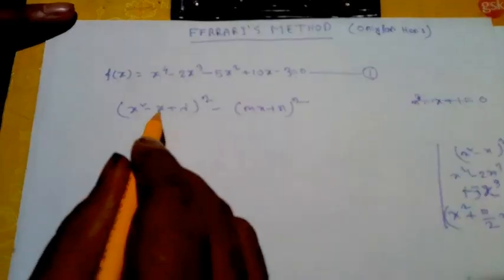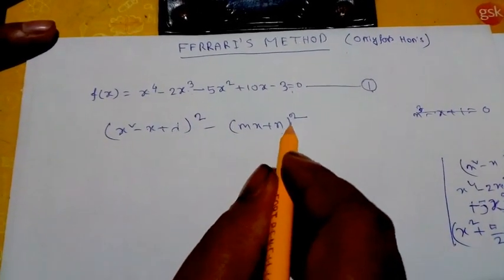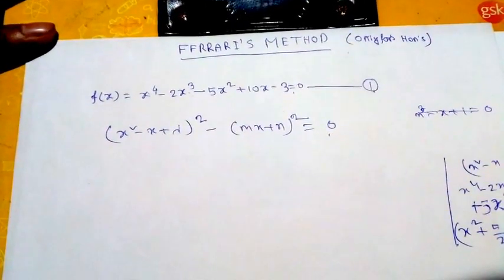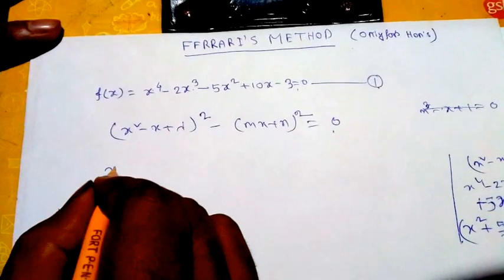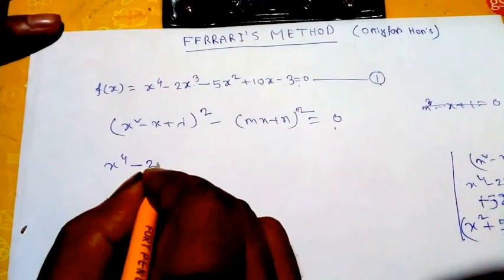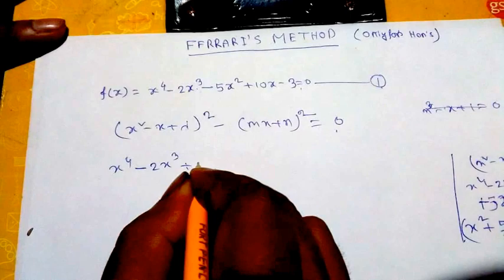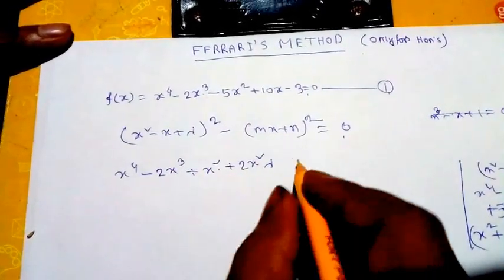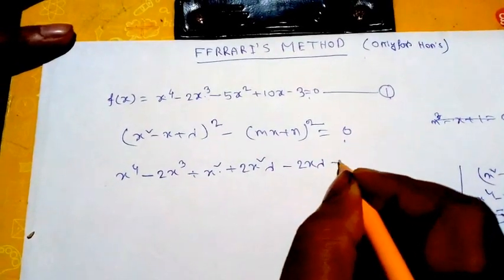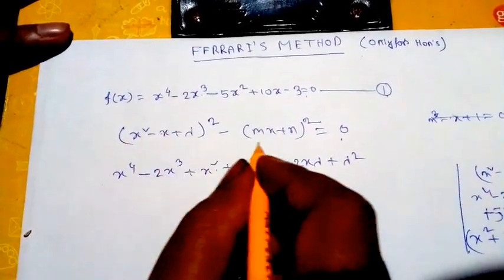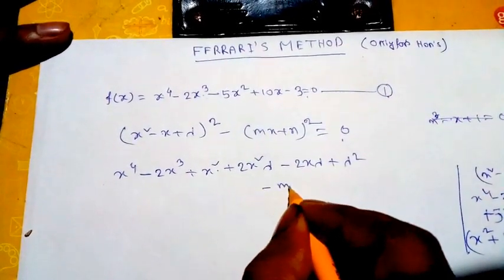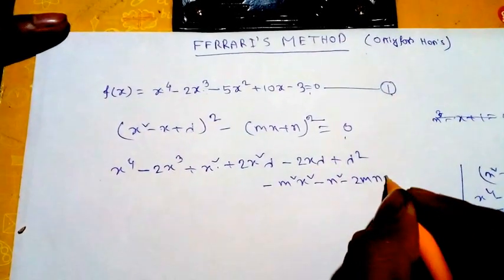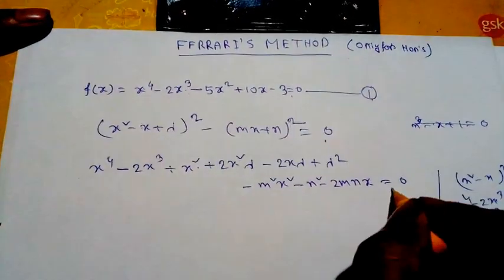So (x² - x + λ)² - (mx + n)² = 0. Expanding, we get x⁴ - 2x³ + x² + 2x²λ - 2xλ + λ² - m²x² - n² - 2mnx = 0.